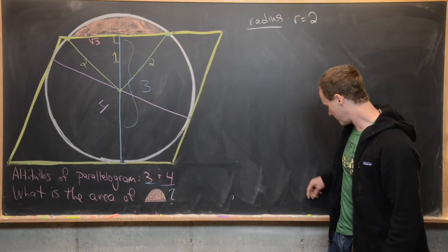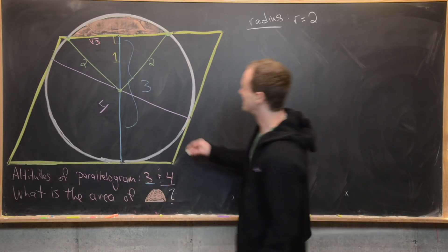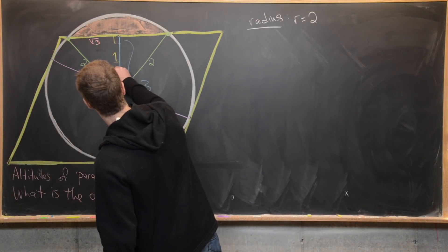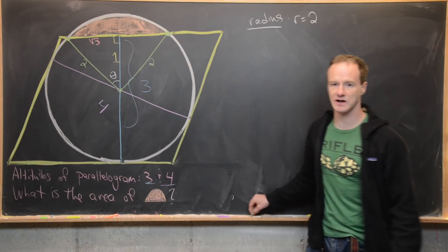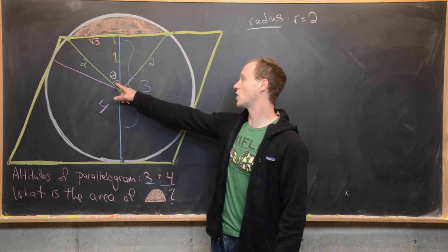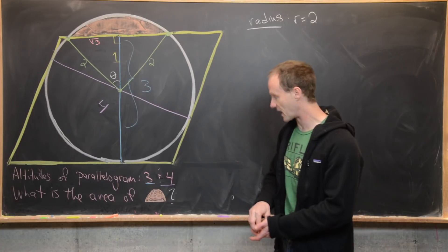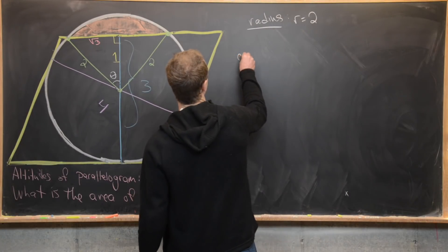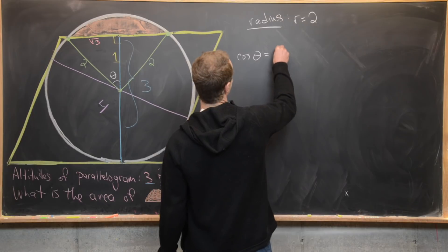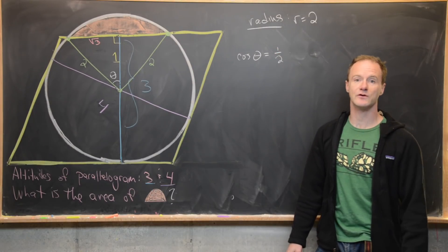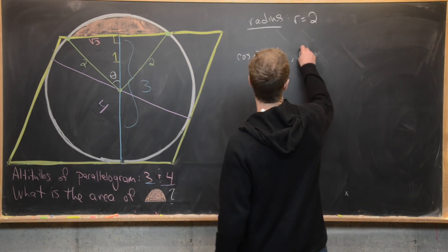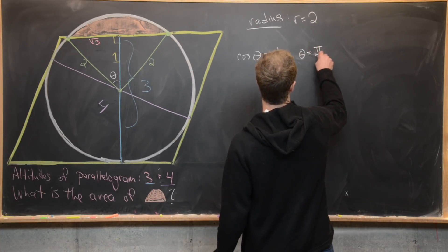Now we also might want to figure out the angle measurement of this angle right here. And we can do that with some trigonometry. So let's notice that the cosine of this angle is going to be equal to the adjacent over the hypotenuse. So in other words, cosine of theta in this case is going to be one half, but that's a well-known value of cosine. So we can now say that theta equals pi over three.